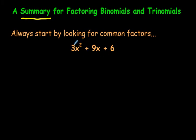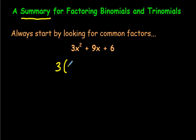If you look at the 3, the 9, and the 6, you'll probably agree that each of these could be divided by 3 — a 3 could come out. Each of these is divisible by 3, so what would be left on the inside if we were to take the 3 out outside of a bracket, and put inside the bracket what's left?